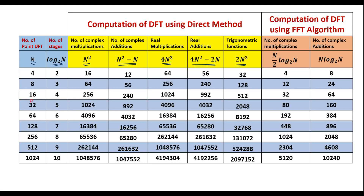Here I have considered different values of N and the corresponding values calculated. For example, if we consider a 4-point DFT, the number of stages required is 2. Number of complex multiplications required in the direct method is 16, complex additions is 12, real multiplications is 64, real additions is 56, and trigonometric functions is 32. For FFT, substituting N equal to 4 gives complex multiplications of 4, and complex additions of 8.